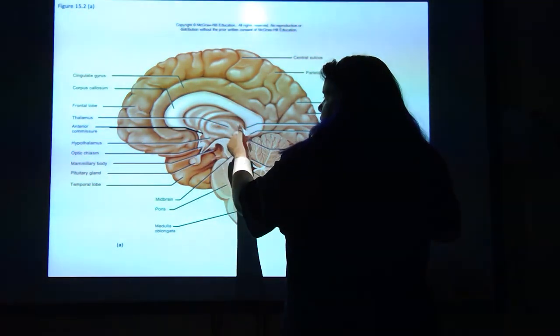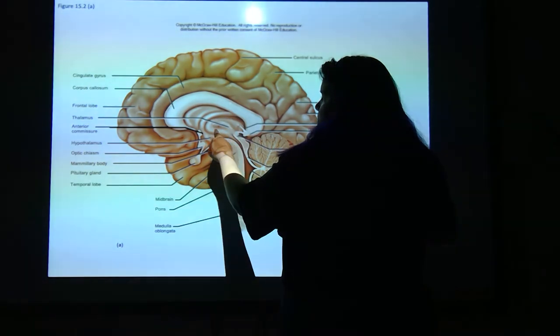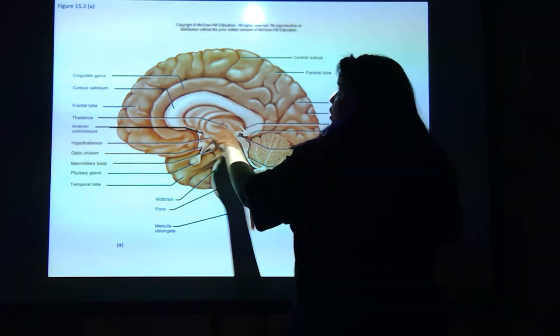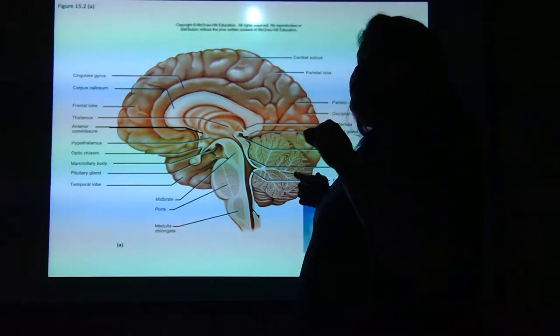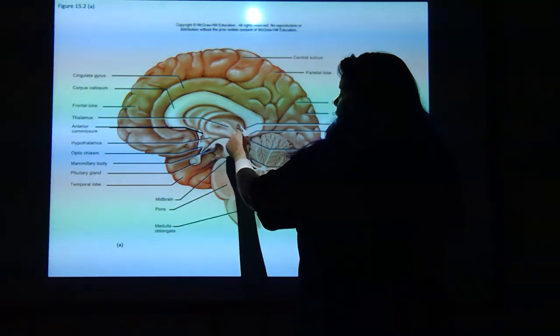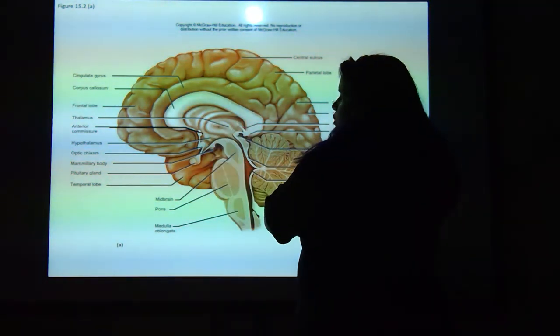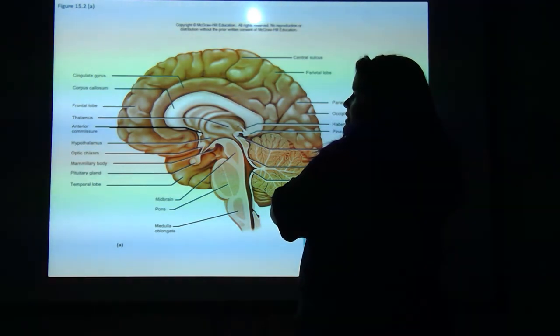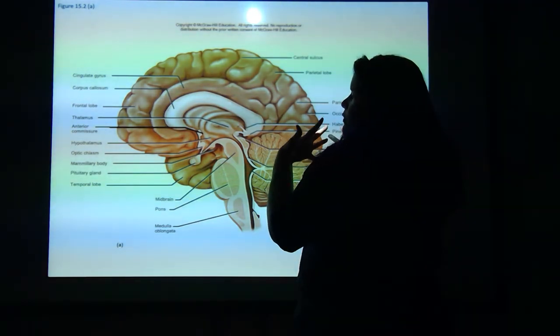Here's the thalamus. See this right here? This is called the interthalamic adhesion — inter meaning 'in between,' lamic meaning 'the thalamus,' adhesion because it adheres the two halves together. The space here is actually what we call the third ventricle — one of the places where we have cerebrospinal fluid flowing.